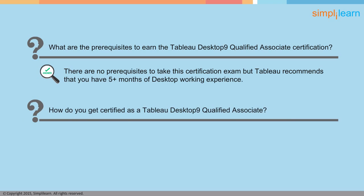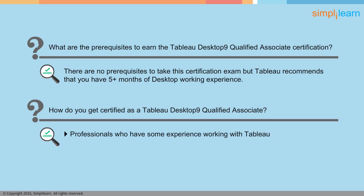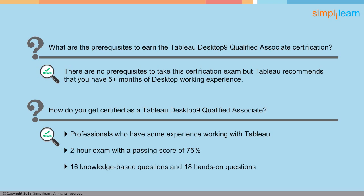How do you get certified as a Tableau Desktop 9 Qualified Associate? There are no eligibility criteria to appear for this exam. It is recommended for professionals who have some experience working with Tableau. It is a two-hour exam with a passing score of 75% and includes different question types such as multiple choice, multiple response, true or false, and matching. There are 16 knowledge-based questions which carry one point each and 18 hands-on questions which carry three points each, with a total of 70 marks.